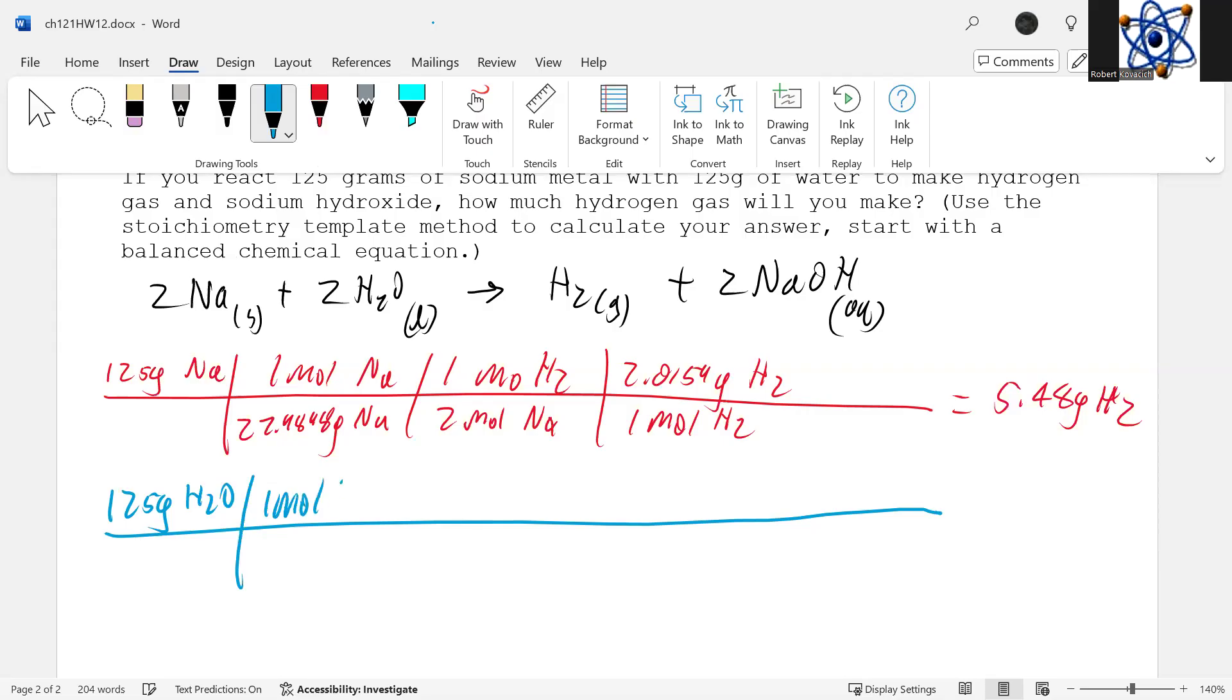I've got again 125 grams, in this case water. So one mole of H₂O is 18.0153 grams of H₂O, and then two moles of H₂O to one mole of hydrogen. One mole of hydrogen is 2.0159 grams of hydrogen. So 125 divided by my 18 number, divided by two, divided by two times 2.0159. This is 6.99 grams of hydrogen. So what's my answer?